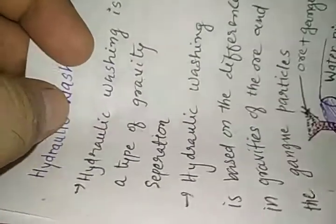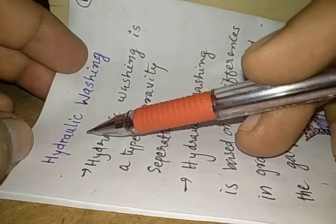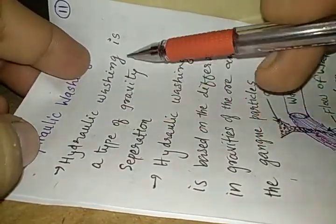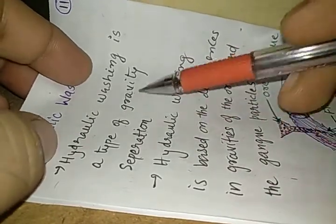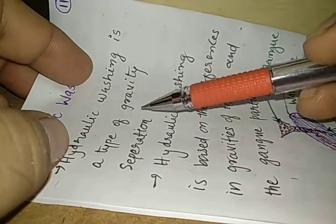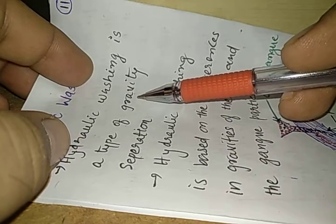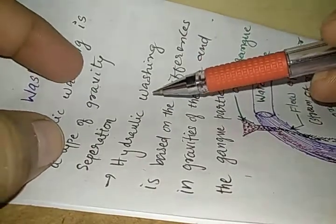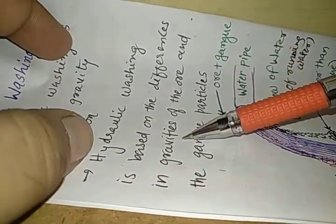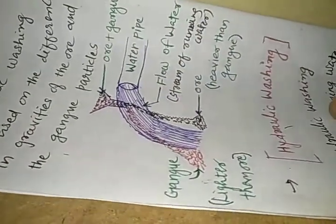We are going to study the first method of enrichment of ore, which is named hydraulic washing. Hydraulic washing is a type of gravity separation. We call it gravity separation because it depends upon the difference in gravity between the ore and the gangue. It is based on the difference in gravities of ore and gangue particles.